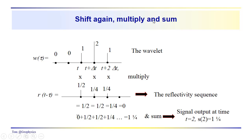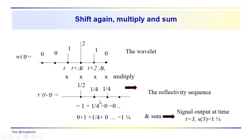Shift again, multiply, and sum. One times one-half is one-half, two times one-fourth is one-half, one times one-fourth is one-fourth. Summing those gives one and one-fourth. The signal output at t equals two, S(2), equals one and one-fourth. Shifting once more: two times one-half is one, one times one-fourth, zero times one-fourth — summing gives one and one-fourth again. So S(3) equals one and one-fourth.